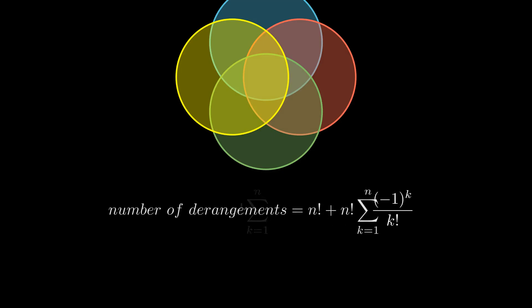Now remember that initially we were interested in the number of derangements, thus we subtract this expression from the total number of permutations. When talking about the probability of a derangement, we'll get rid of n! altogether by dividing by it.